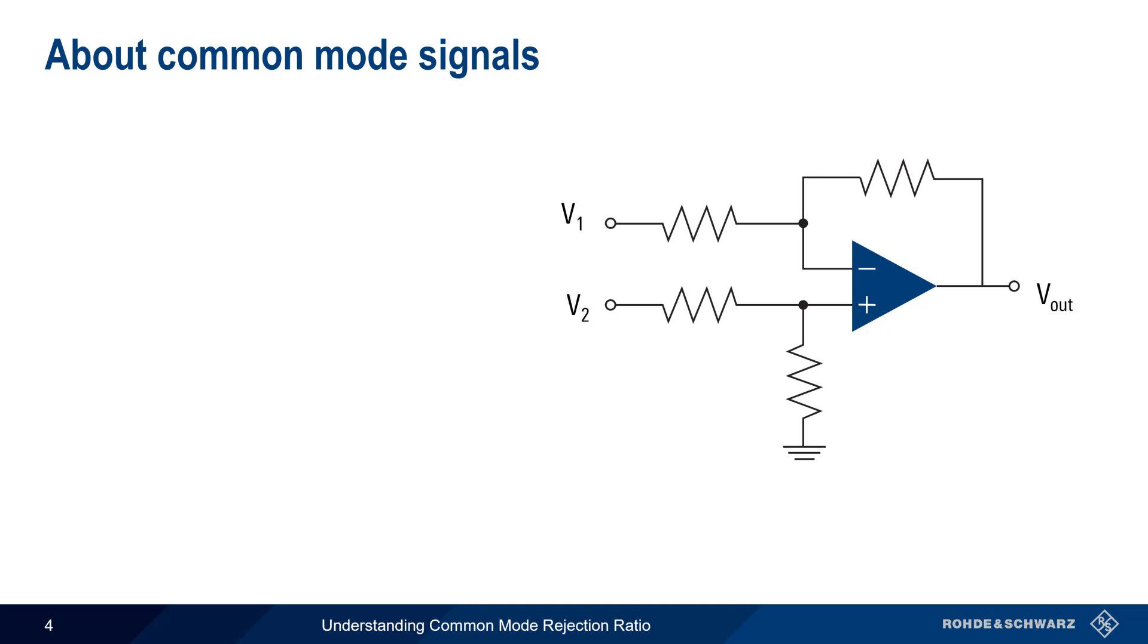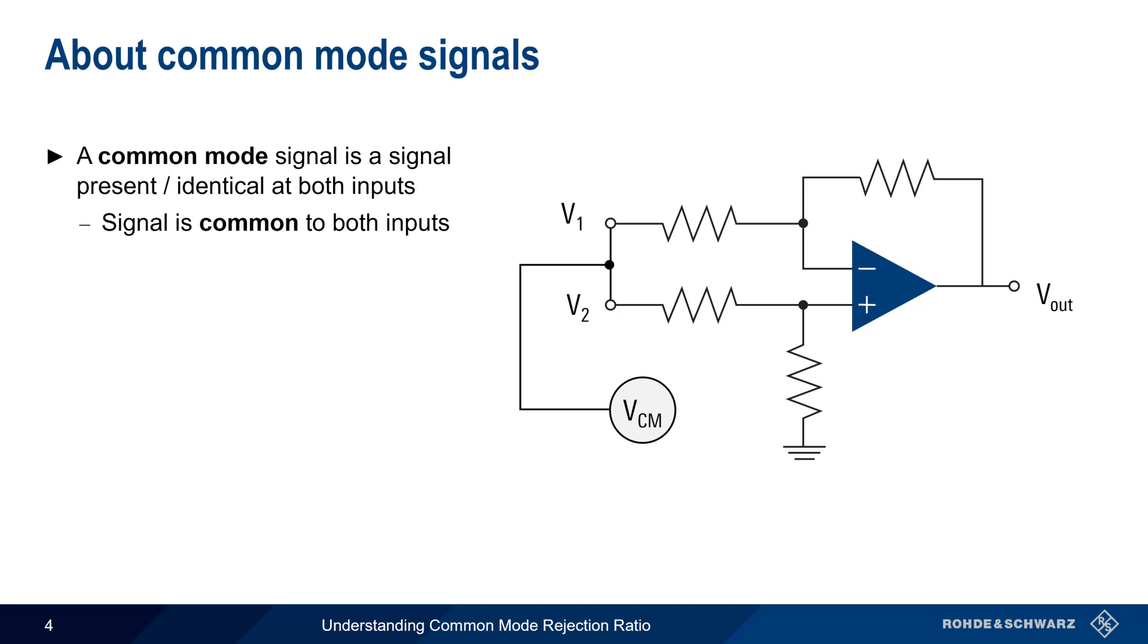The opposite of a differential mode signal is a common mode signal, which is a signal that's present and identical on both inputs. That is, the signal is common to both inputs.